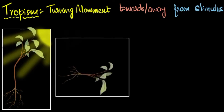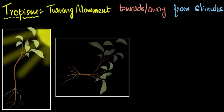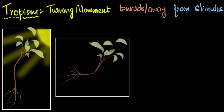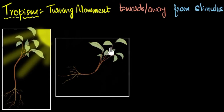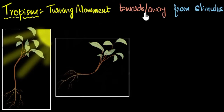For another example, if you plant a plant horizontally, you can observe that the stems bend towards the light rather than staying horizontal, and the stem's movement is turning away from gravity. You can also see that the roots are turning towards gravity.